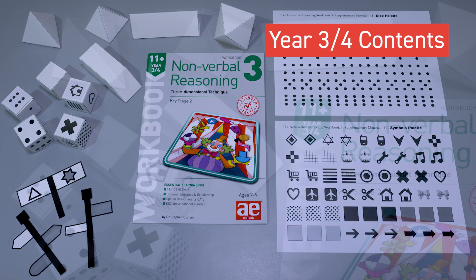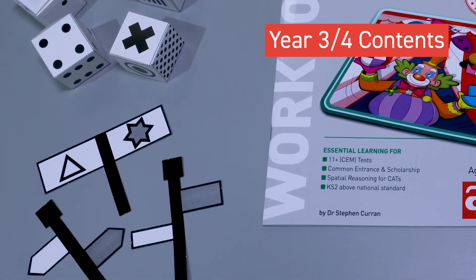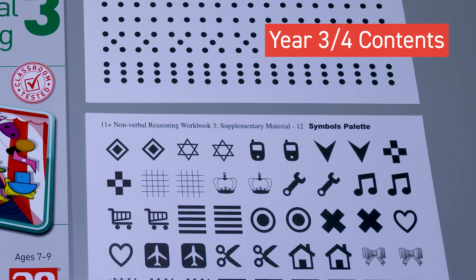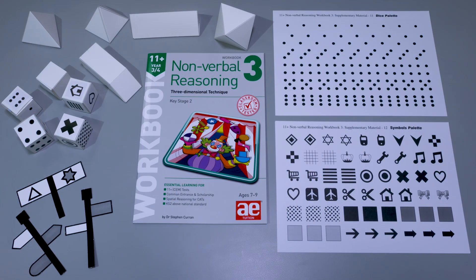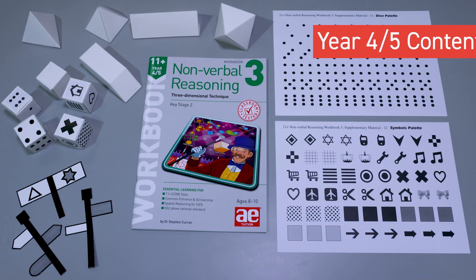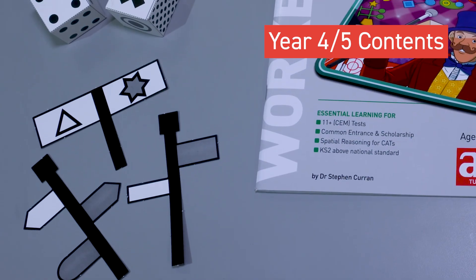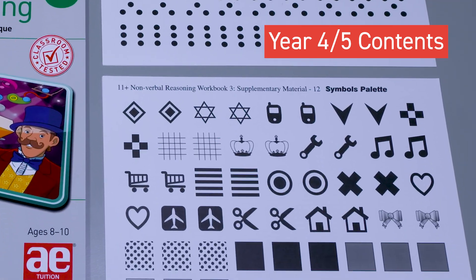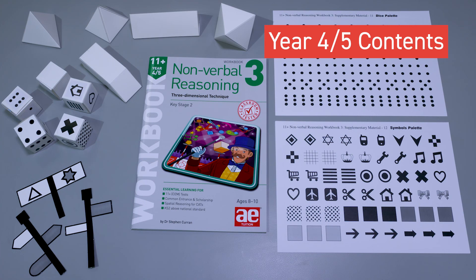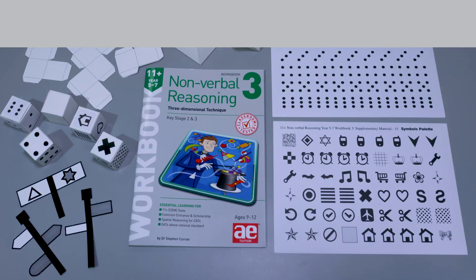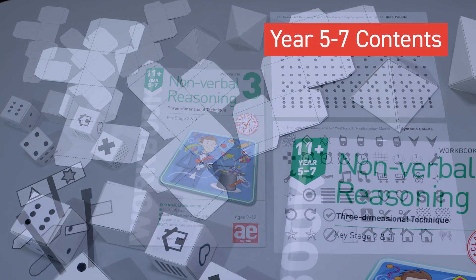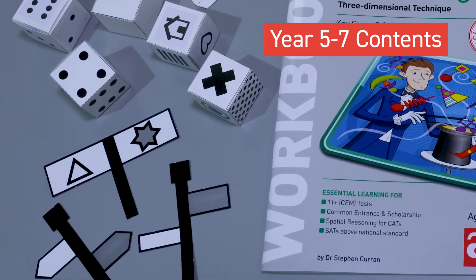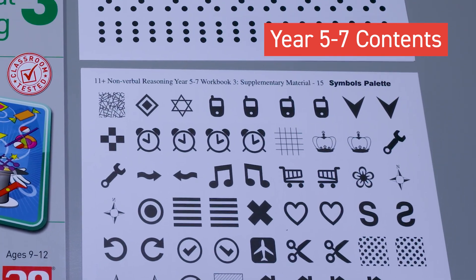The Year 3 to 4 workbook includes 9 sheets of pop out shapes and 4 sheets of stickers. The Year 4 to 5 workbook includes 9 sheets of pop out shapes and 4 sheets of stickers. The Year 5 to 7 workbook includes 11 sheets of pop-out shapes and 5 sheets of stickers.